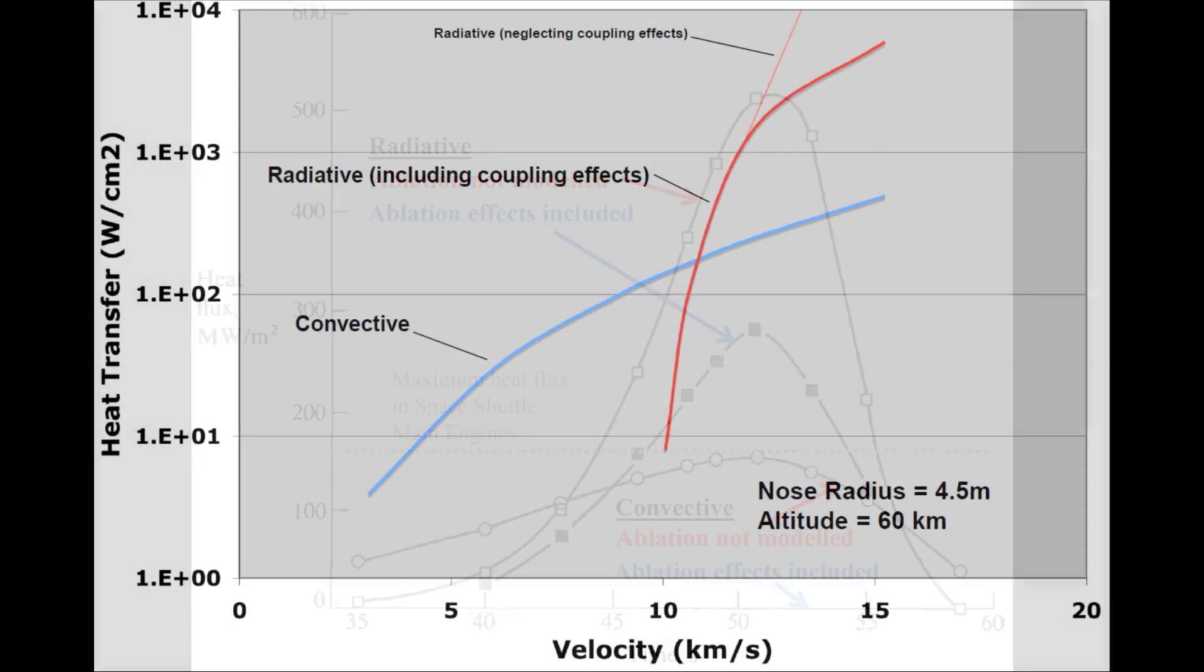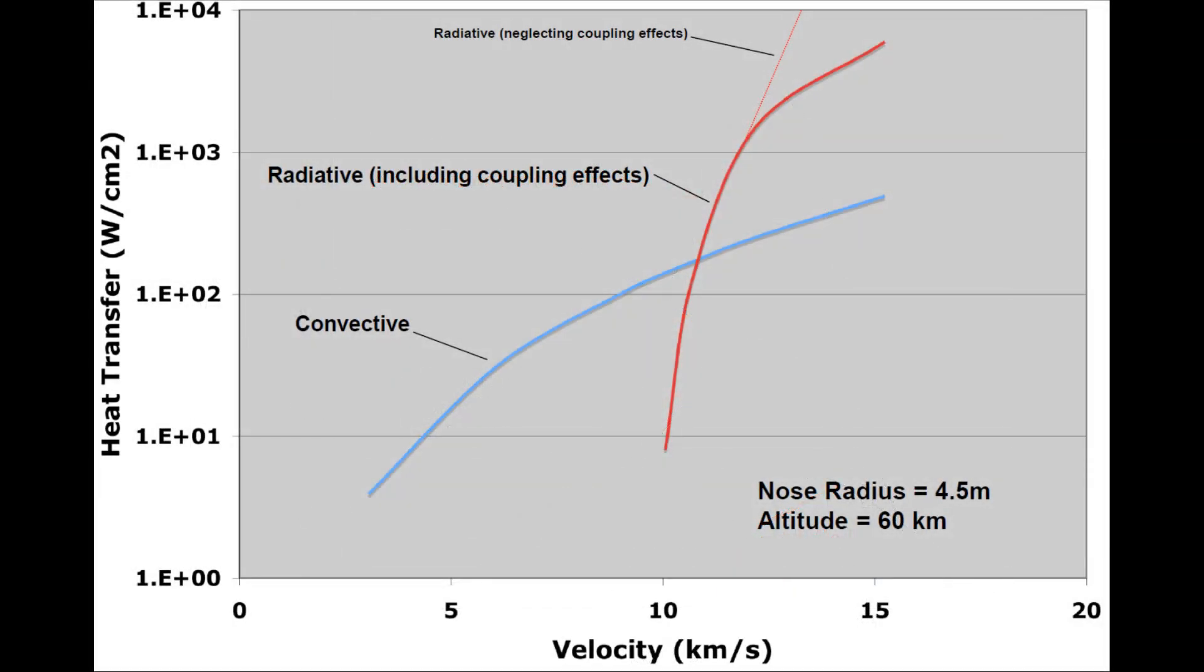Based on these two examples, we would expect to see very different capsule geometries for low-Earth orbit re-entry capsules, which will experience mostly convective heating, and for extremely superorbital capsules, like the Galileo probe, which experience mostly radiative heating. And this is exactly what we observe.